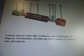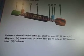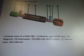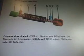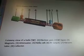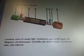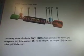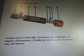A cutaway view of a helix TWT: electron gun, RF input, magnets, attenuator, helix coil, RF output, vacuum tube, collector.